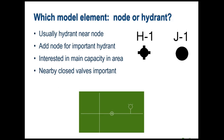What you're really interested in is how much water can be delivered to a part of the system — the main capacity in the area — rather than the exact output from each individual hydrant. That covers the large-scale master plan view. The most commonly used type of fire flow evaluation is identifying the available fire flow at a specific site. Someone walks in and says they're going to build a school, hospital, or prison at a location and wants to know if there's enough fire flow available.